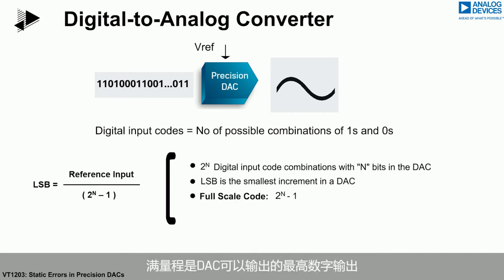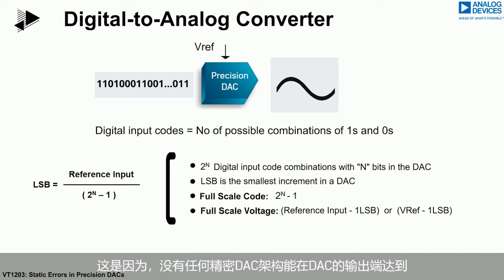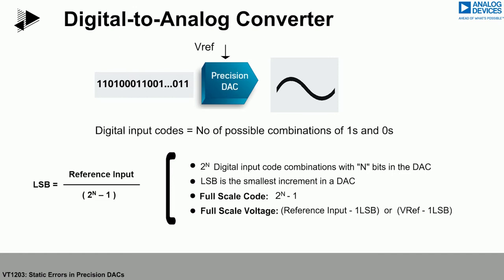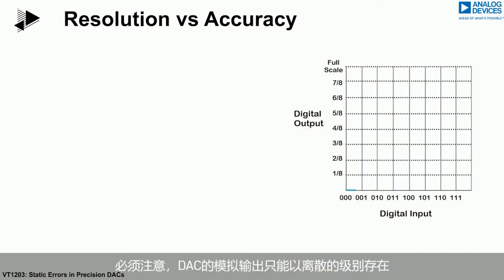Full-scale is the highest digital output that the DAC is able to output. Full-scale translates into a value of VREF minus 1 LSB in the analog domain, since no precision DAC architecture is able to reach the actual reference value at the output of the DAC. The ideal analog output of a DAC is calculated as the product of the LSB weight by the digital input. It is important to note that the analog output of a DAC can only exist at discrete levels.